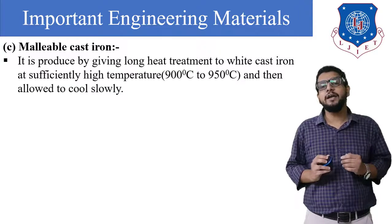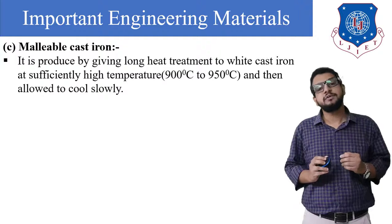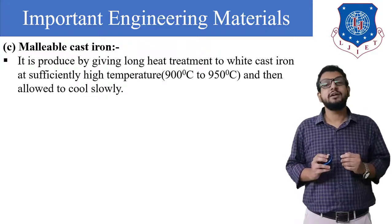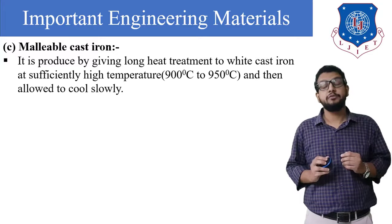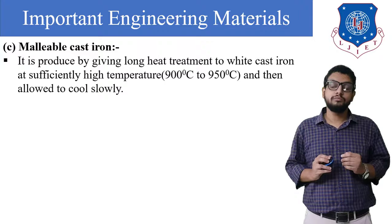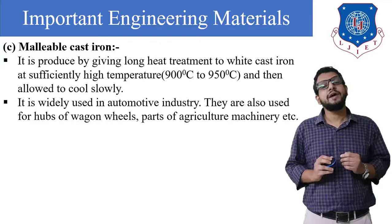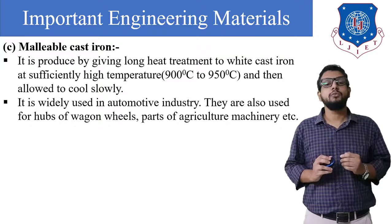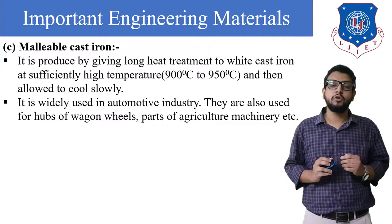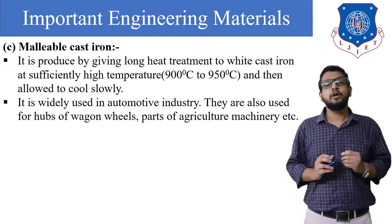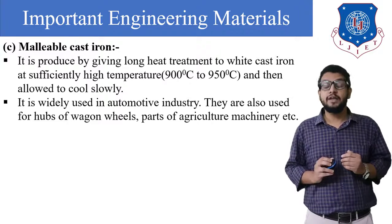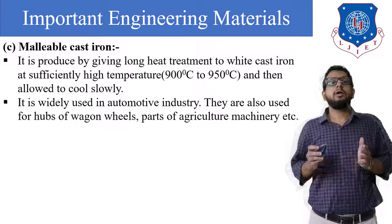Malleable cast iron is produced by giving long heat treatment to white cast iron at sufficiently high temperatures ranging from 900°C to 950°C and then allowing it to cool down slowly. It is widely used in the automotive industry and also for hubs of wagon wheels and parts of agricultural machinery.